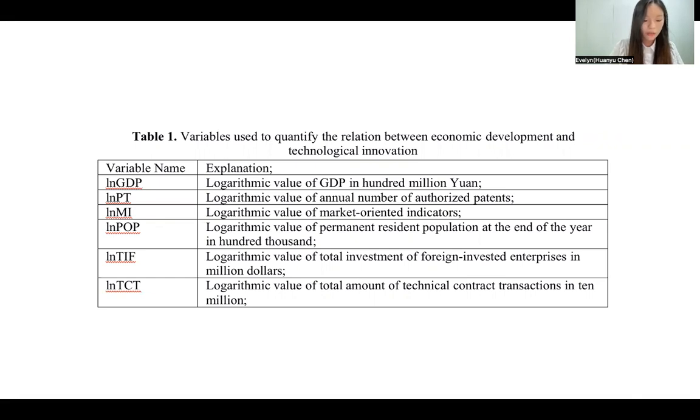Patents are one of the essential indicators of scientific and technological innovation outputs and an important benchmark for measuring the innovation capacity and technology protection level of a region or a unit. Therefore, I choose the number of patents in different regions of China to represent scientific and technological innovation and set it as the independent variable.